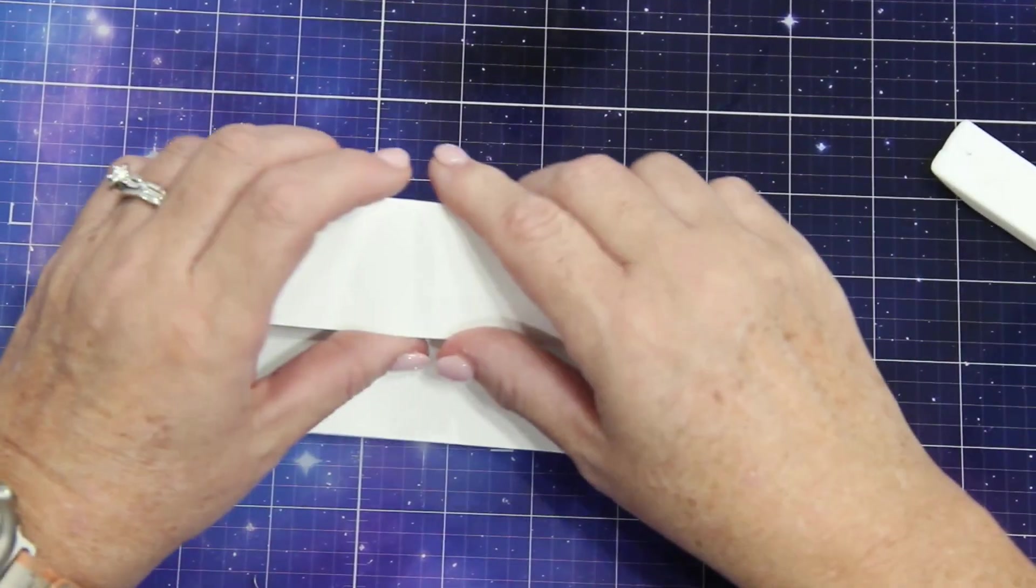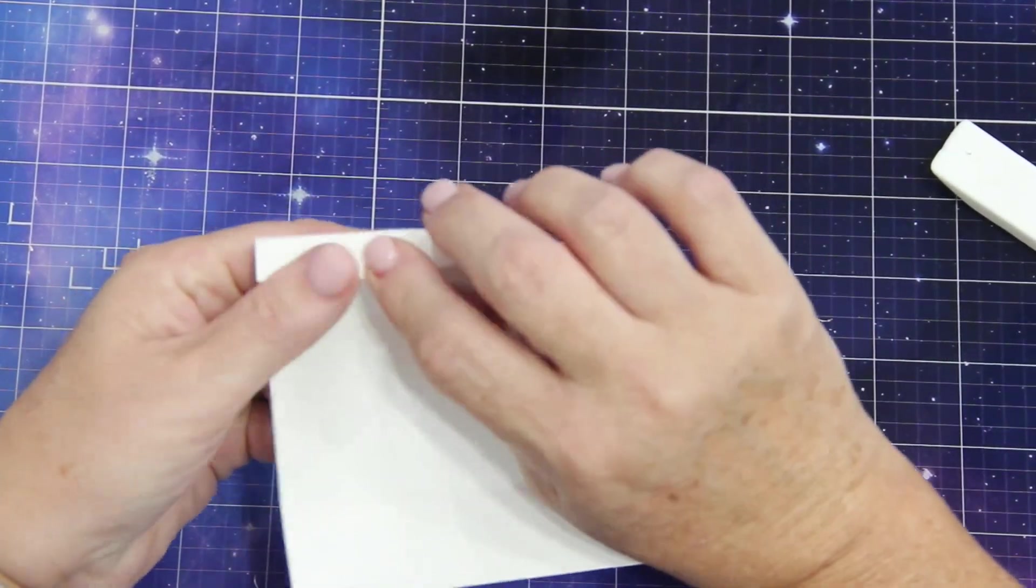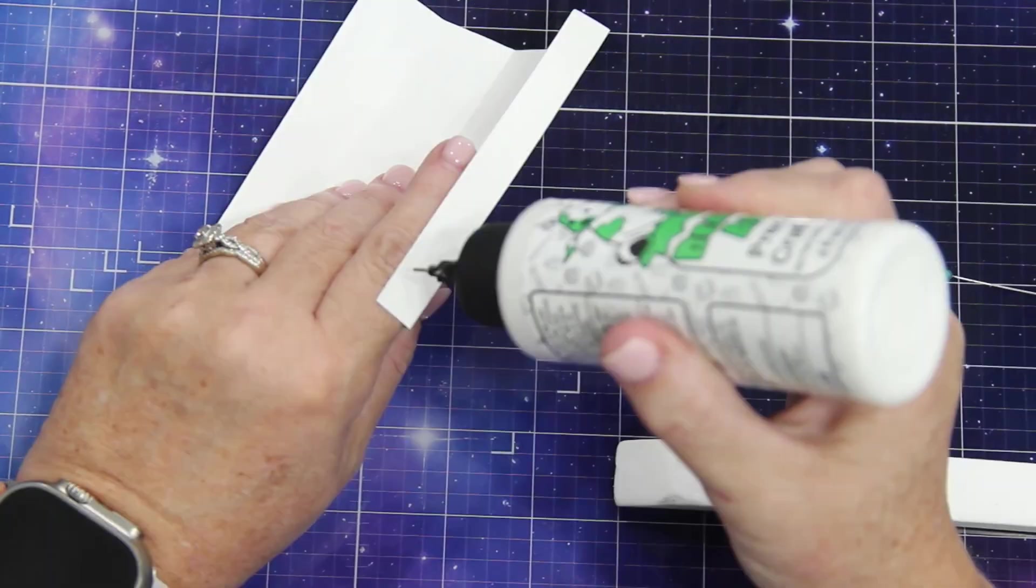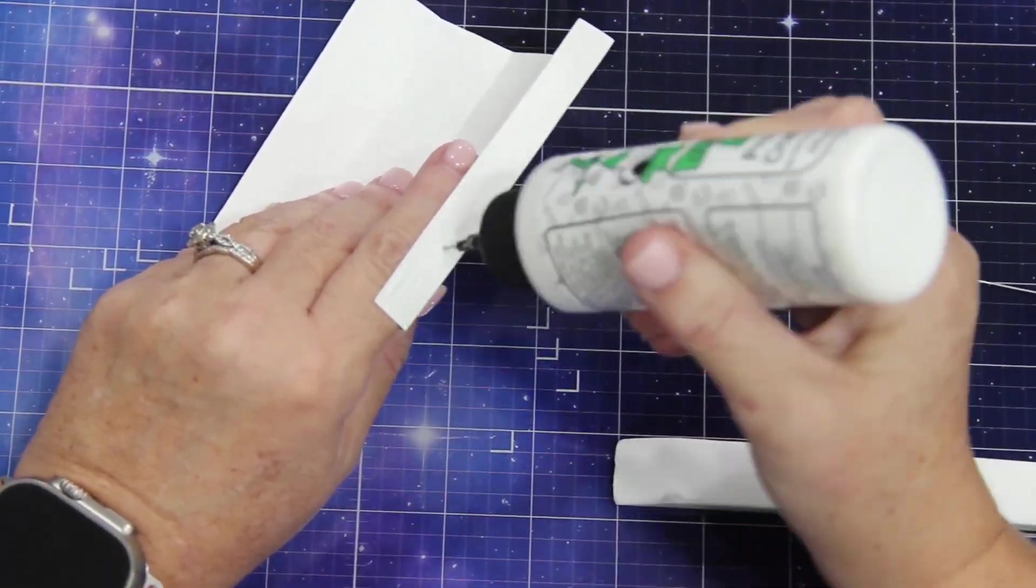And so I am bending those like mountains to form a square, and I am reinforcing that with my bone folder. You could, of course, use your soda pop press or stamp press, anything just to get those scores down.